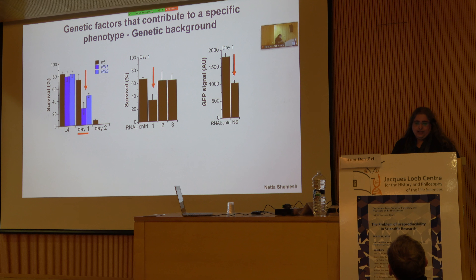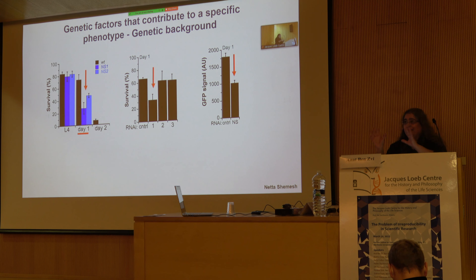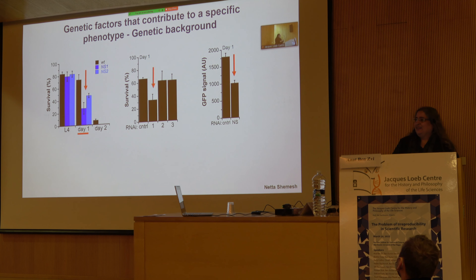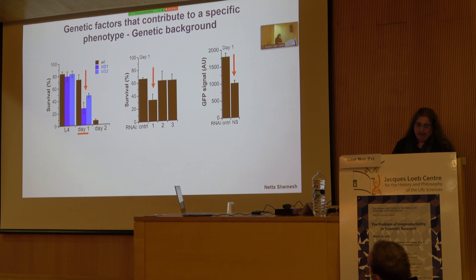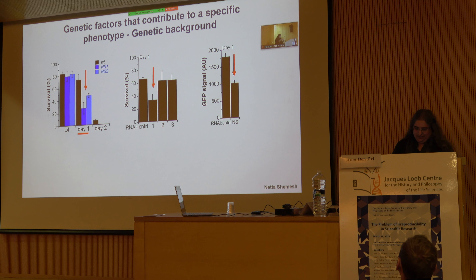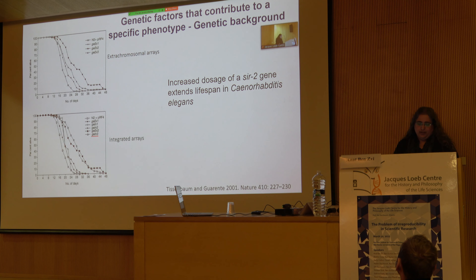Genetic background can be a huge problem because we usually sequence only the known mutation — what I call 'under the lamp' — and don't sequence the rest of the genome. We assume it's similar and that there are no big changes, but this assumption needs to be tested from time to time. I usually backcross things into my N2 wild-type background, use more than one wild-type background when I can, and replace the worms from time to time — all good practices to avoid genetic mistakes.